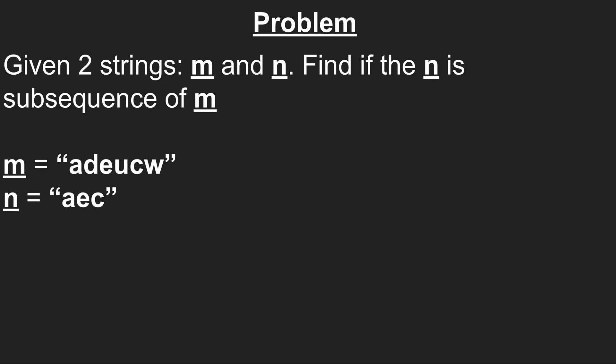Let's take a look at the problem. We are given two strings, m and n, and we need to find whether or not n is a subsequence of m. So what does that mean? It means that we can remove some characters from m, and then m and n will be equal.